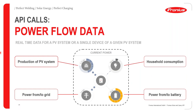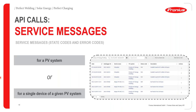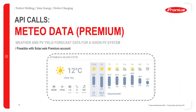Power flow data can also be queried via the API, including PV production, power to and from the grid, household consumption, and battery charge and discharge power. Service messages — state codes and error codes — can also be queried. For example, a home pilot error code 9-2 would indicate it couldn't reach 60°C within 24 hours. Meteor data queries are only applicable for SolarWeb Premium subscribers, who get access to a seven-day weather forecast.